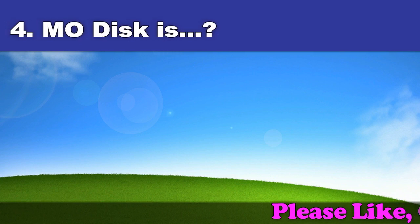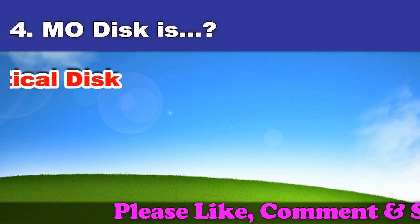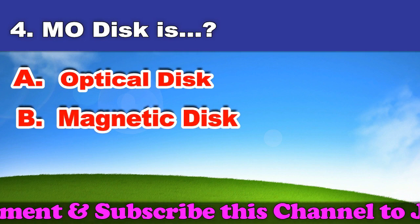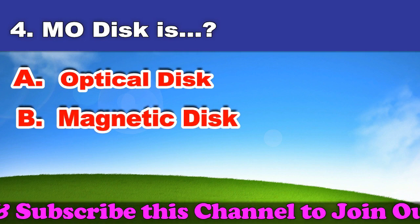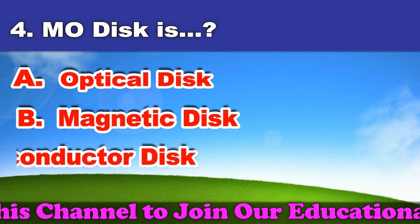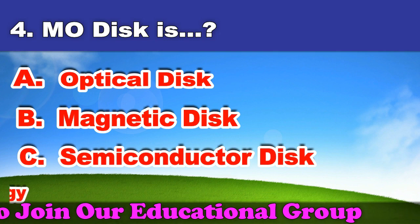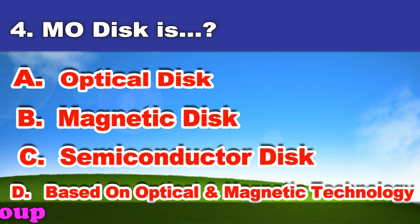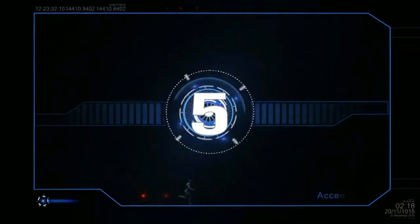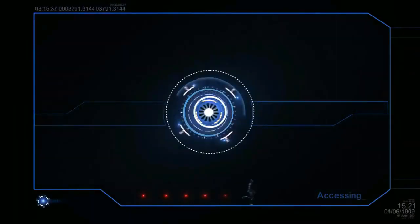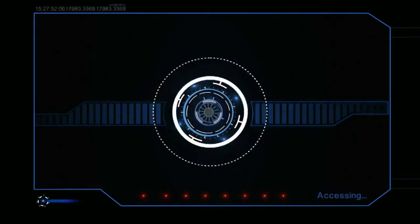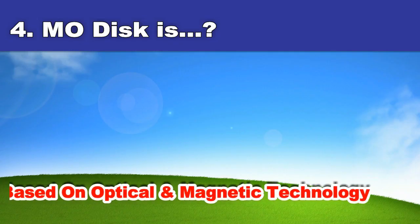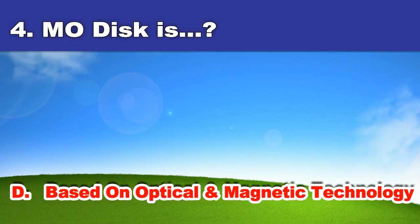Fourth question: MO disk is. A. Optical disk. B. Magnetic disk. C. Semiconductor disk. D. Based on optical and magnetic technology. And the answer is based on optical and magnetic technology.